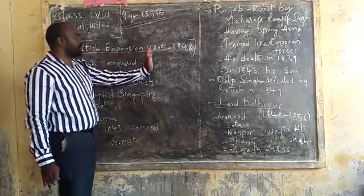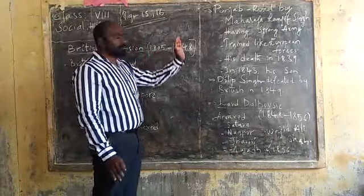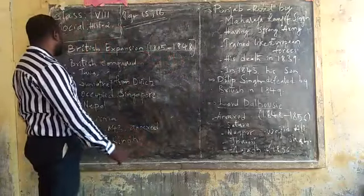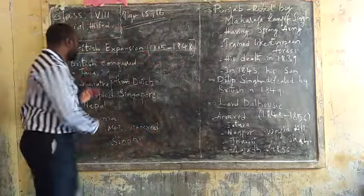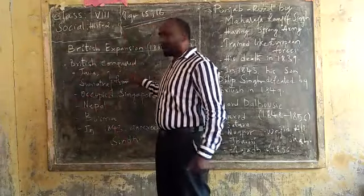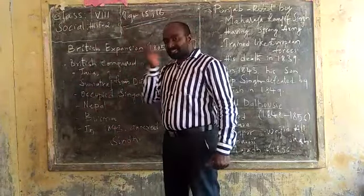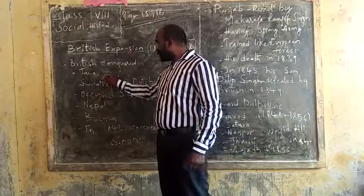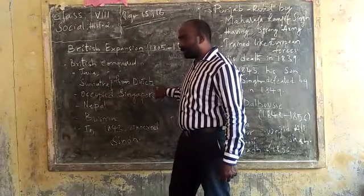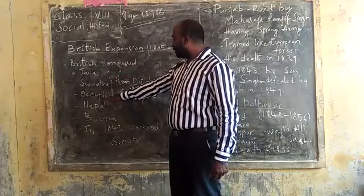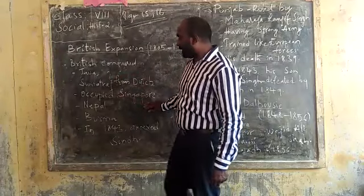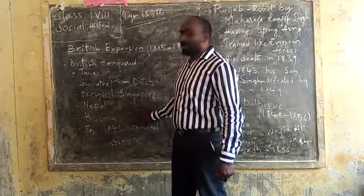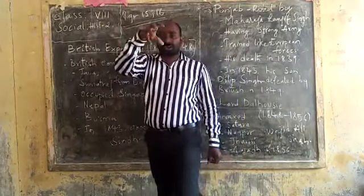British expansion started from 1805 to 1848. We can understand very clearly how the British people expanded. Here you can see, British people conquered the North and Southern parts of India. At the same time, Java and Sumatra — these two were occupied from Dutch. And also Singapore was also occupied. After that, the Kingdom of Nepal and Burma — these two areas were also occupied. So we can see almost all the Asian continent is under the control of the British.